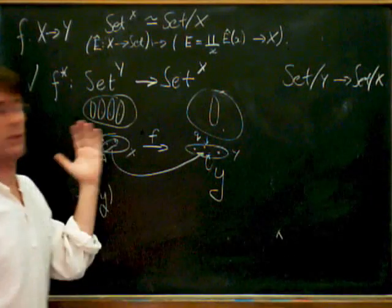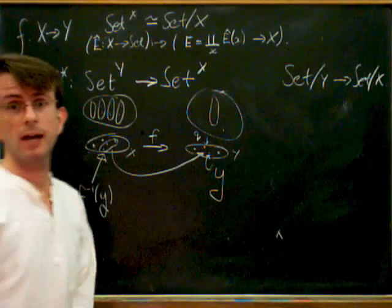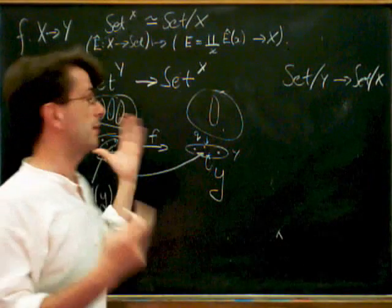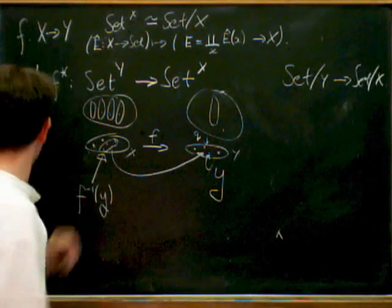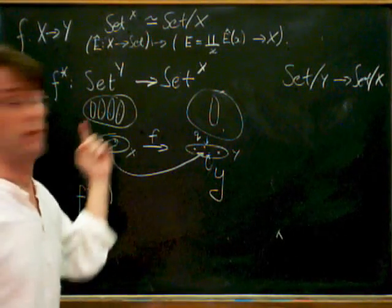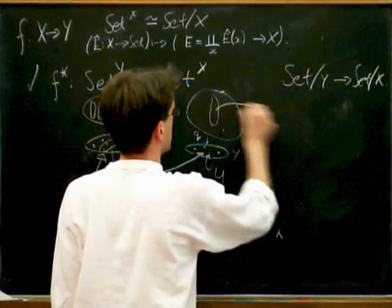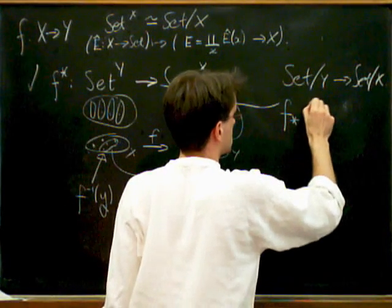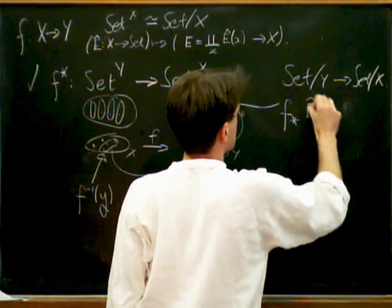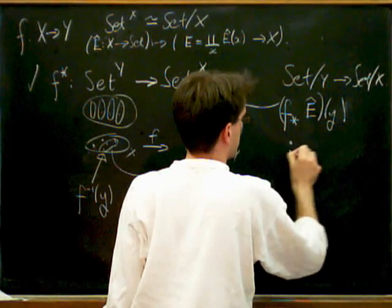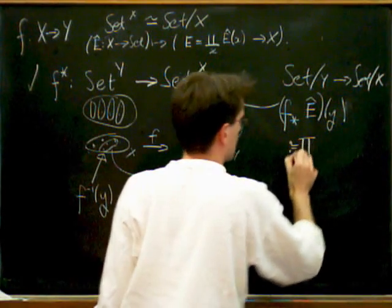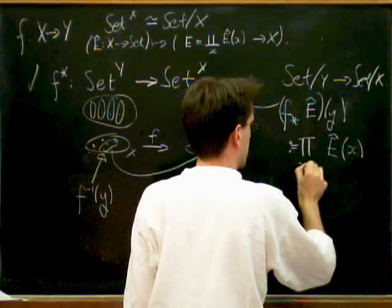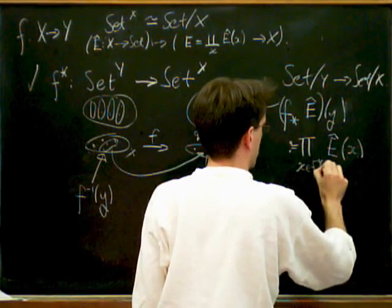So I want to associate something to this point y. Now I've got a collection of sets and I want to create a single set. So how can I do that? Well, I can think of at least two ways. I can either take the disjoint union of these or I can take the product of them. I'm in sets, I'm allowed to do those two things. In this case, what I actually want to do is I want to take the product of these sets. So this here, so this is going to be f lower star of e hat at point y. This is going to be defined to be the product of the fibres of x, where x is in the preimage of y.